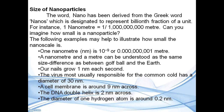The virus most usually responsible for the common cold has a diameter of 30 nanometers. The cell membrane is around 9 nanometers across. The DNA double helix is 2 nanometers across. The diameter of one hydrogen atom is around 0.2 nanometers. This gives an idea of the size of nanoparticles.